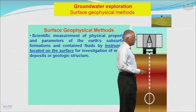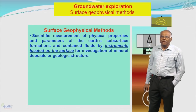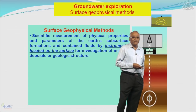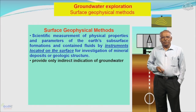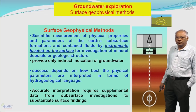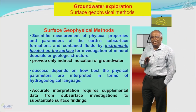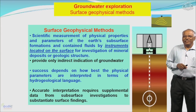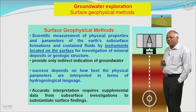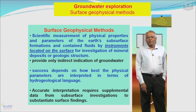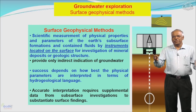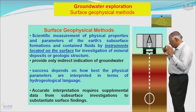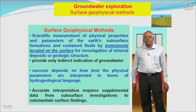As far as ground water exploration is concerned, the electrical resistivity technique is applied at the surface, and is therefore also termed a surface geophysical method. In this technique, scientific measurements of physical properties and parameters of the earth's subsurface formations or contained fluids are made by instruments located on the surface. Just as shown in the figure, the instrument is located on the surface and goes on to measure the subsurface properties of the medium.